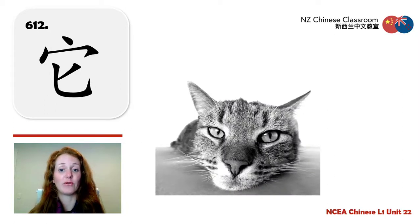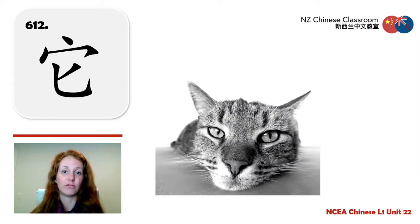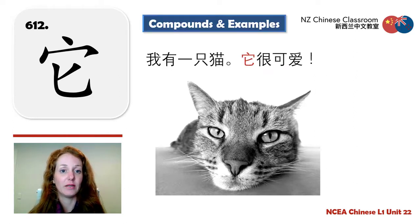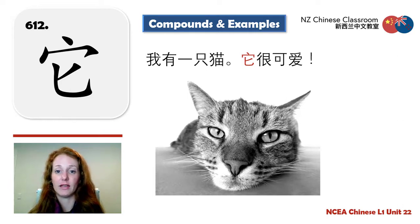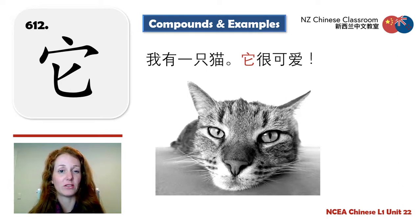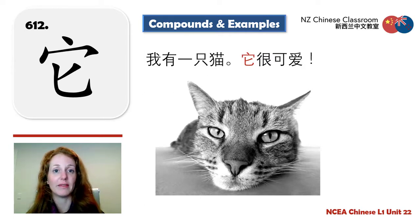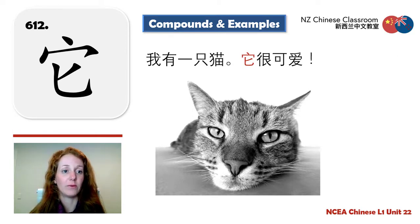And 它 — also meaning 'it.' This is the non-human version of he or she. Example: 我有一只猫，它很可爱. I have one cat and it is very cute. This can refer to animals or even non-living things, like talking about a desk — 它.